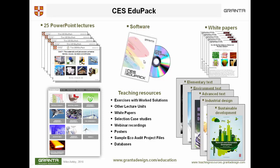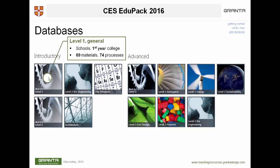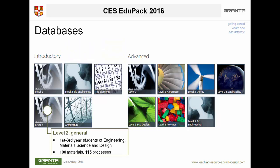Let's open the software and see what's inside. When you open it, what you see is a set of 12 databases available for those various areas — polymer engineering, aerospace, and so forth. Here's the simplest one: the introductory databases are on this side and the more advanced ones are on the right. This one is aimed at high schools and possibly first year college education — it has 69 materials and 74 processes.